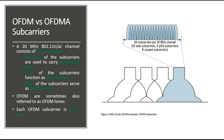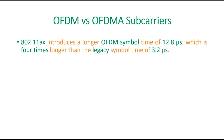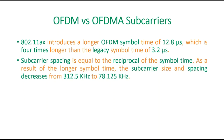802.11ax introduced a longer OFDM symbol time of 12.8 microseconds, which is 4 times longer than the legacy symbol time of 3.2 microseconds. Since subcarrier spacing is reciprocal to symbol time, as a result of this longer symbol time the subcarrier size and spacing decreases from 312.5 KHz to 78.125 KHz. This is how the calculation is done.